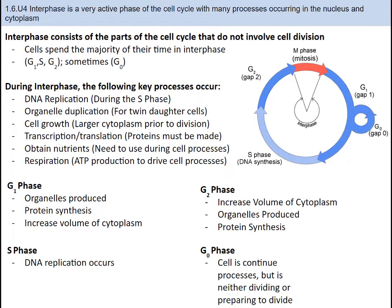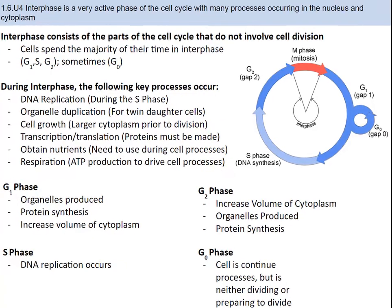Let's talk first about interphase. Interphase specifically consists of the parts of the cell cycle that do not involve cell division. Cells spend the majority of their time in this phase, which you can see in the graphic to the right. During interphase, you can see in the middle part of the slide many of the key processes that occur — probably good to jot those down.